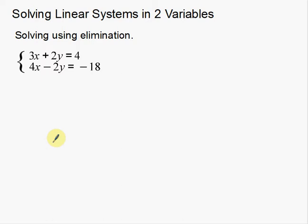Notice how this system is set up. 3x plus 2y is equal to 4, and 4x minus 2y is equal to negative 18. Notice the x's are lined up, the y's are lined up, the equal signs are lined up, and the numbers are lined up. That's on purpose — we want that to happen because we're going to add down the columns.